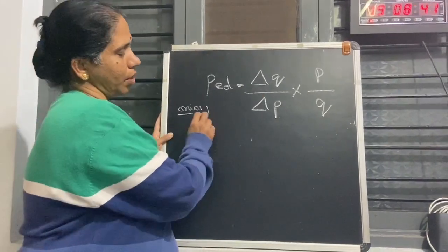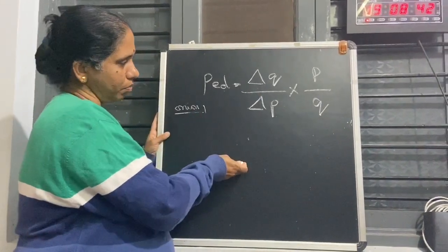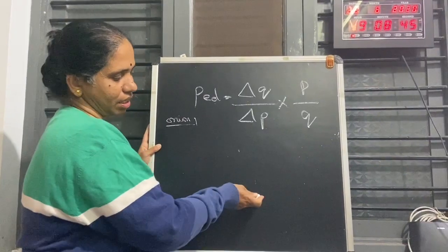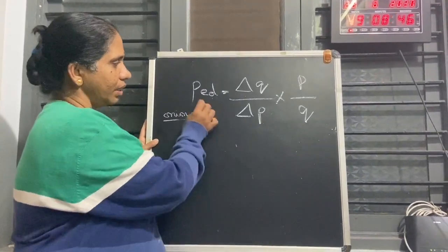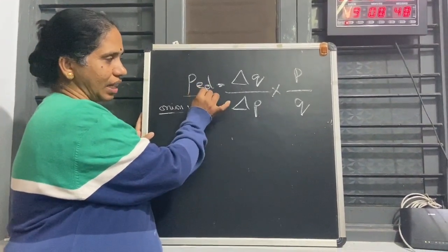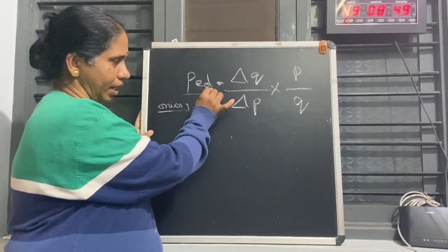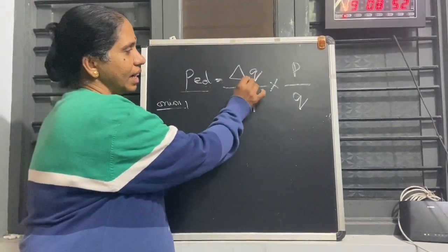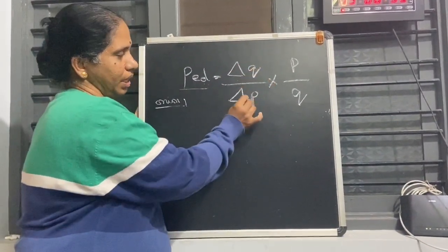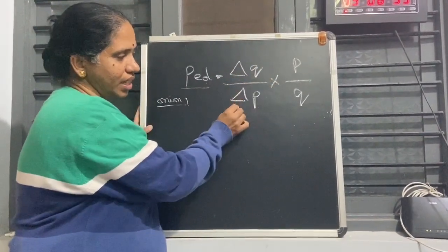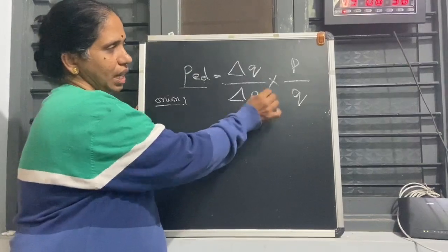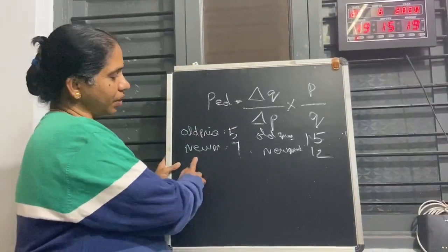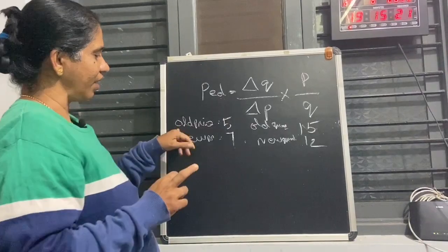The formula is: Ped — that is, price elasticity of demand — equals delta Q over delta P, multiplied by P over Q. Here, delta Q is the change in quantity, delta P is the change in price, P is the initial price, and Q is the initial quantity. This is the sum given in your book.